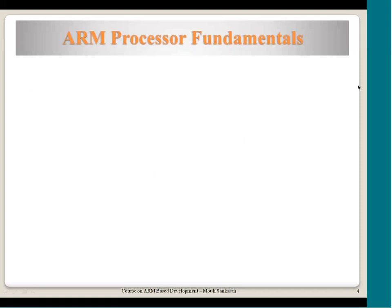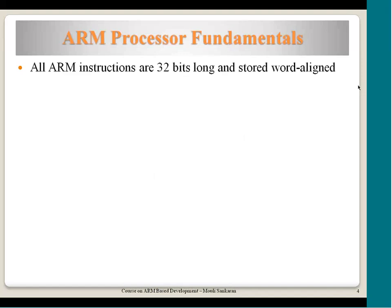Let us refresh the fundamentals on which the ARM processor is designed. All of you are aware that ARM instructions are all 32 bits long. They are all aligned on word boundaries — that means 4-byte boundaries — and all of them are 32 bits in length.